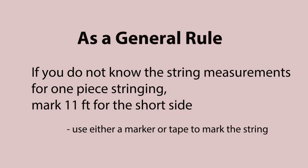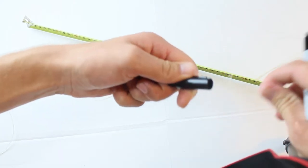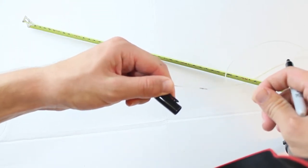Again, it's not universally always true. Sometimes the measurements can be a little bit different, but from my experience, marking the 11 foot mark and then stringing with the rest of the string is a good way to make sure you have plenty of string for the racket.